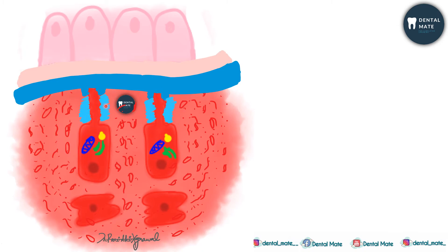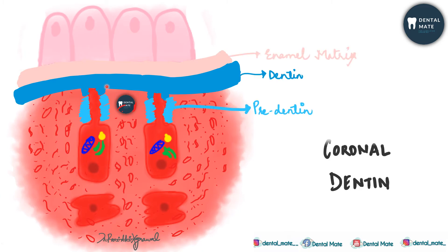The light blue region represents predentine, and the adjacent region is dentine. Along with the enamel matrix, this is how the coronal portion of the dentine is formed.